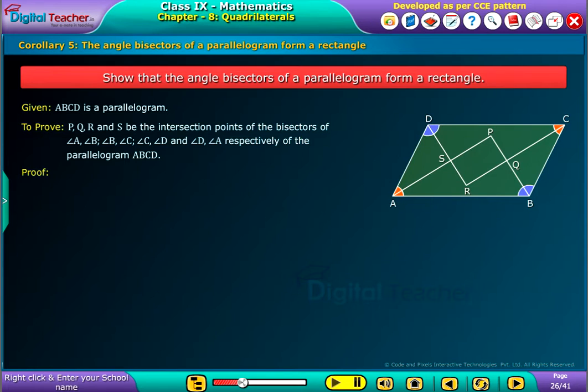The proof is as follows. In triangle ASD, it can be observed that DS bisects angle D and AS bisects angle A. Angle DAS plus angle ADS equal to half into angle A plus half into angle D, which is equal to half into angle A plus angle D.